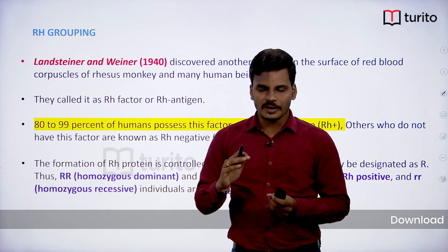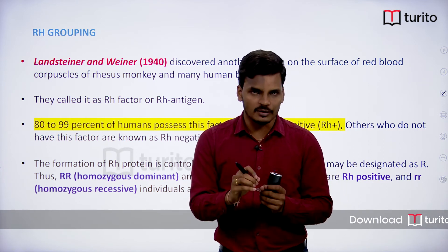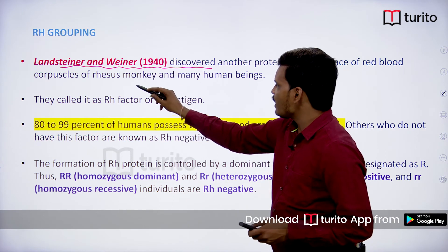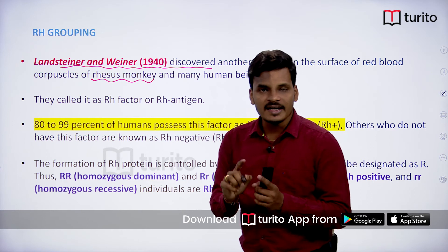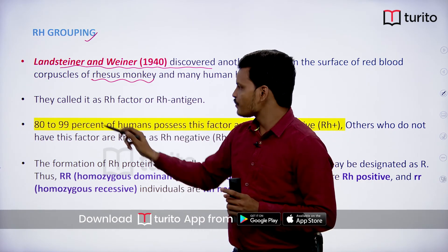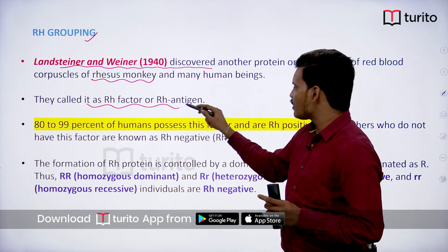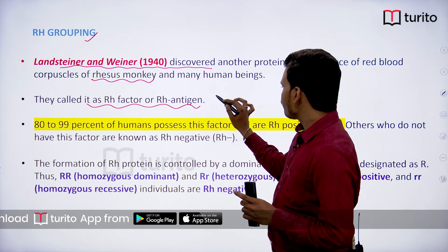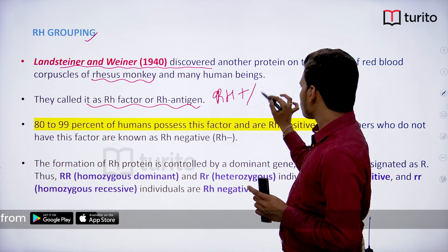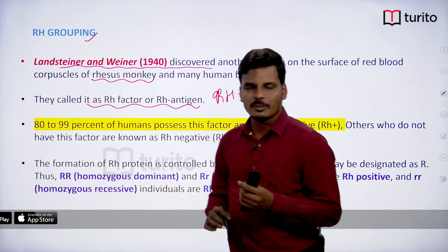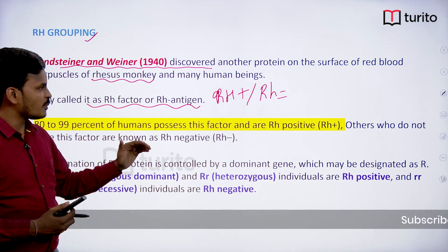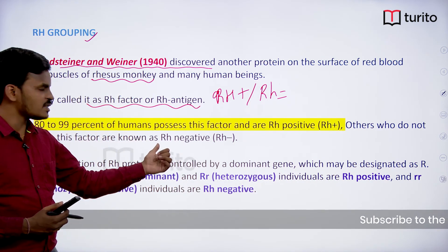Next, with respect to RH blood grouping — RH blood grouping is a minor blood grouping system. It was identified by Landsteiner and Wiener and was first identified in rhesus monkeys, which is why it is called the RH factor or RH antigen. The majority of persons are RH positive, with very few being RH negative. 80 to 99 percent of humans possess RH positive.